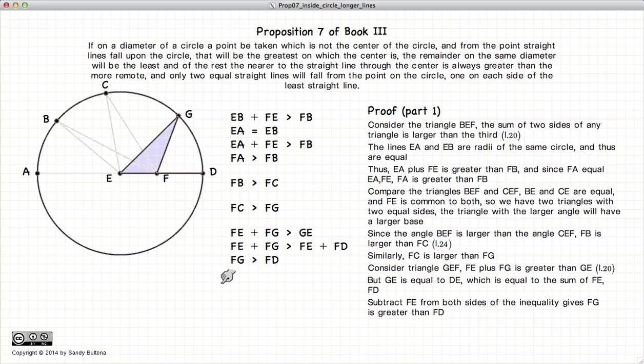Putting that all together, we have that FA is greater than FB is greater than FC greater than FG which is greater than FD. So that is the first part of the proposition which has been proven.